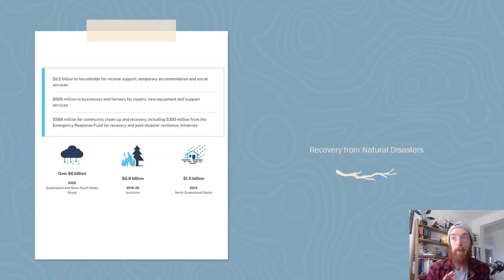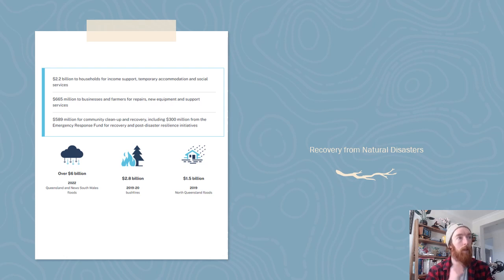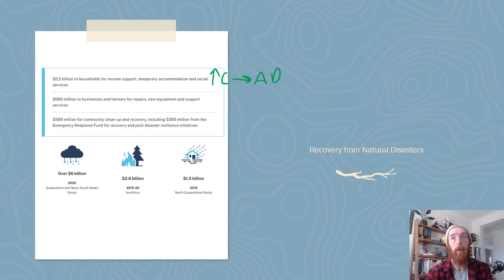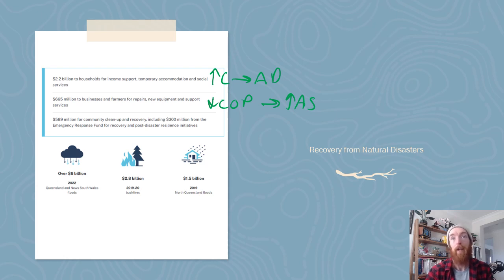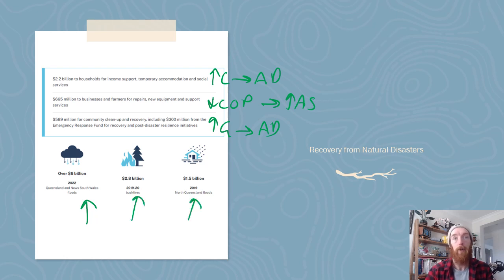When we get into some specific policies, a lot of the focus at the moment is on recovery from natural disasters — floods, bushfires, etc. So a lot of government spending is going towards those areas. There's $2.2 billion for households for income support, temporary accommodation, and social services, which is going to increase consumption spending and therefore aggregate demand. There's $665 million to businesses and farmers for repairs, new equipment, support and services, which should lower cost of production and therefore be favorable for aggregate supply. There's also $589 million for community cleanup and recovery, including $300 million for the Emergency Response Fund and post-disaster resilience initiatives — include that as government spending which increases aggregate demand. Additionally, over $6 billion on Queensland and New South Wales floods, $2.8 billion on bushfires, and $1.5 billion on North Queensland floods.